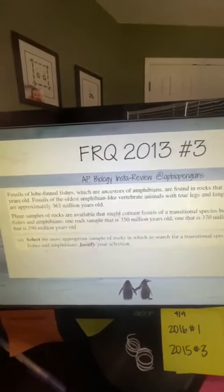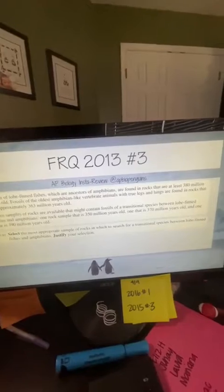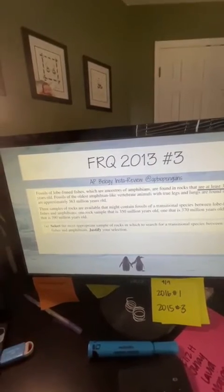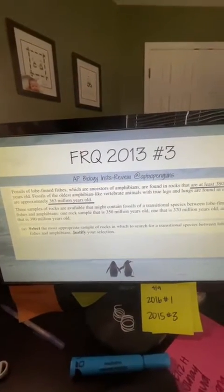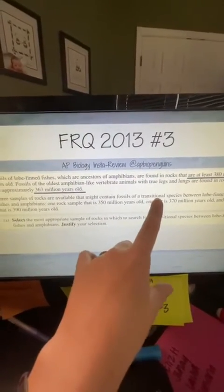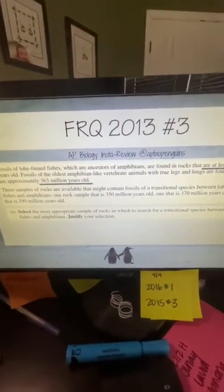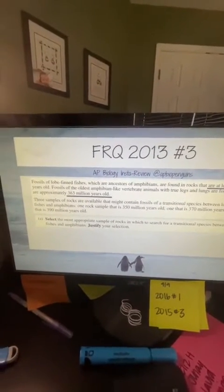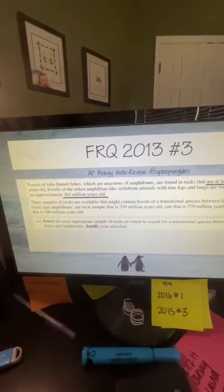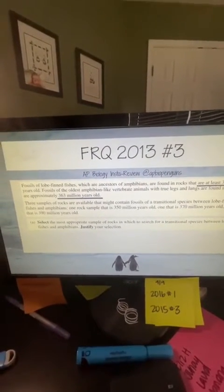So let's get started. Fossils of lobe-finned fishes, ancestors of amphibians, are found in rocks at least 380 million years old. Fossils of early amphibian-like vertebrates with true legs and lungs are found in rocks approximately 363 million years old. Three rock samples are available that might contain fossils of a transitional species — one 350 million years old, one 370 million years old, and one 390 million years old. We need to select the most appropriate sample to search for that transitional species.